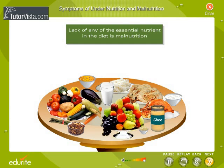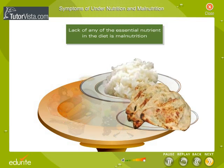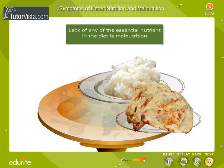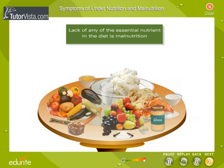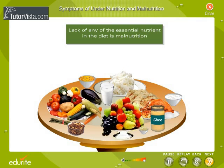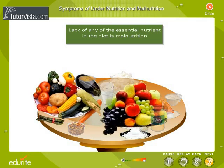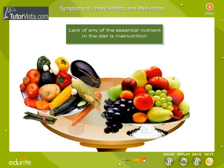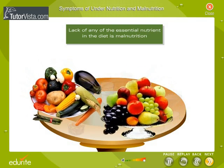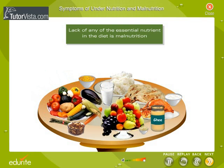For example, if our food mainly consists of cereals like rice or wheat, we may lack in proteins. Lack of vegetables and fruits in the diet will lead to malnutrition, as the diet is deficient in vitamins and minerals.